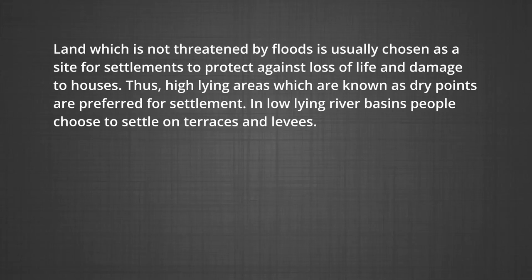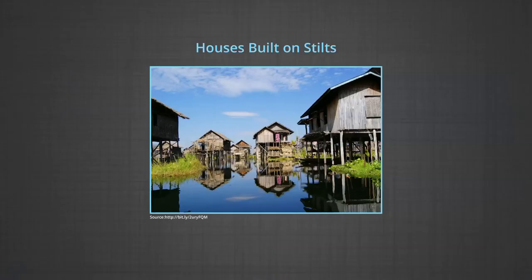In low-lying river basins, people choose to settle on terraces and levees. For example, in tropical countries like Malaysia and Indonesia, houses are built on stilts to stay protected from floods, animals, and insects. In equatorial countries, such houses also offer a cooling effect.